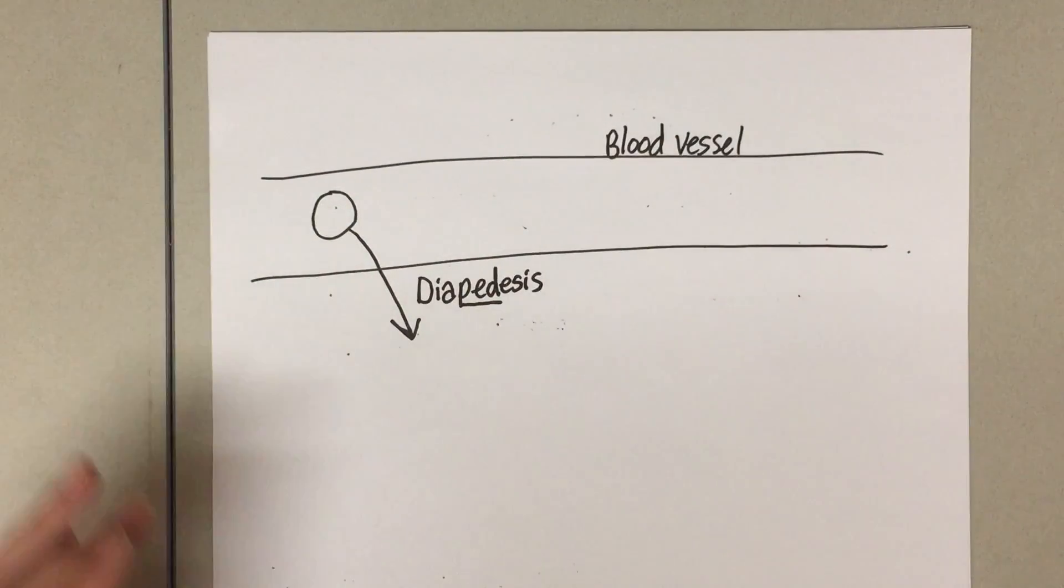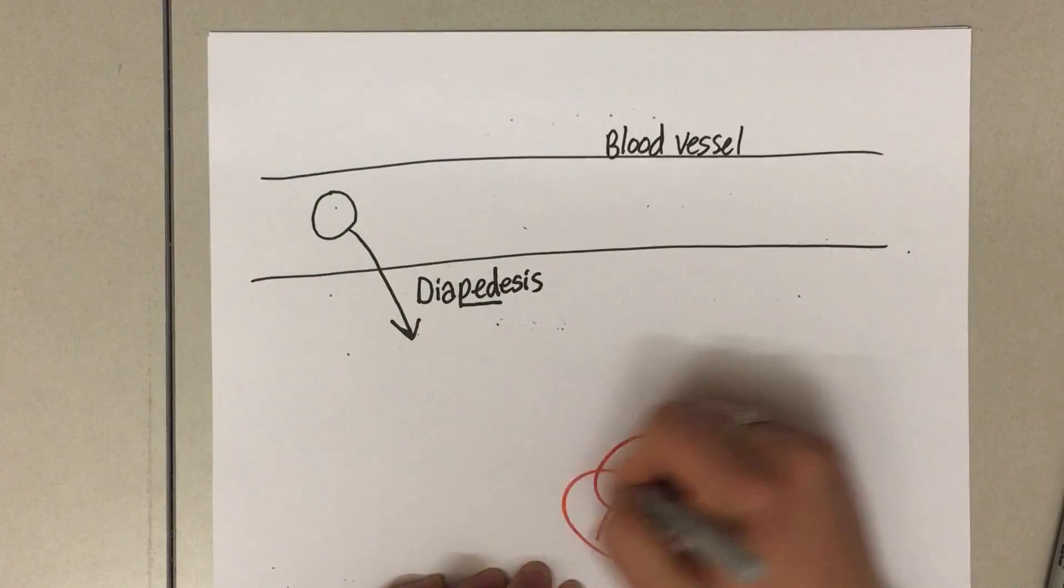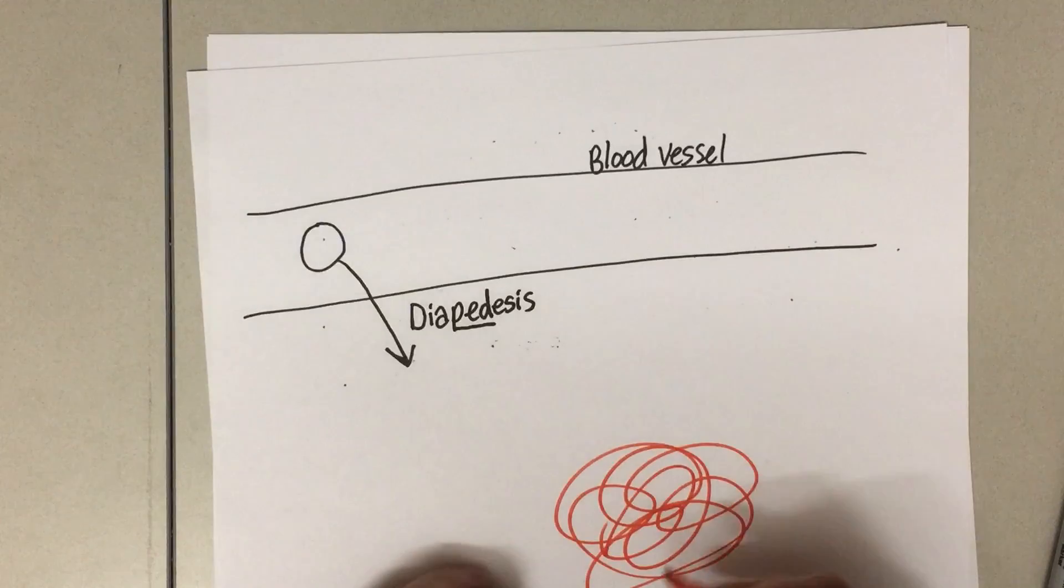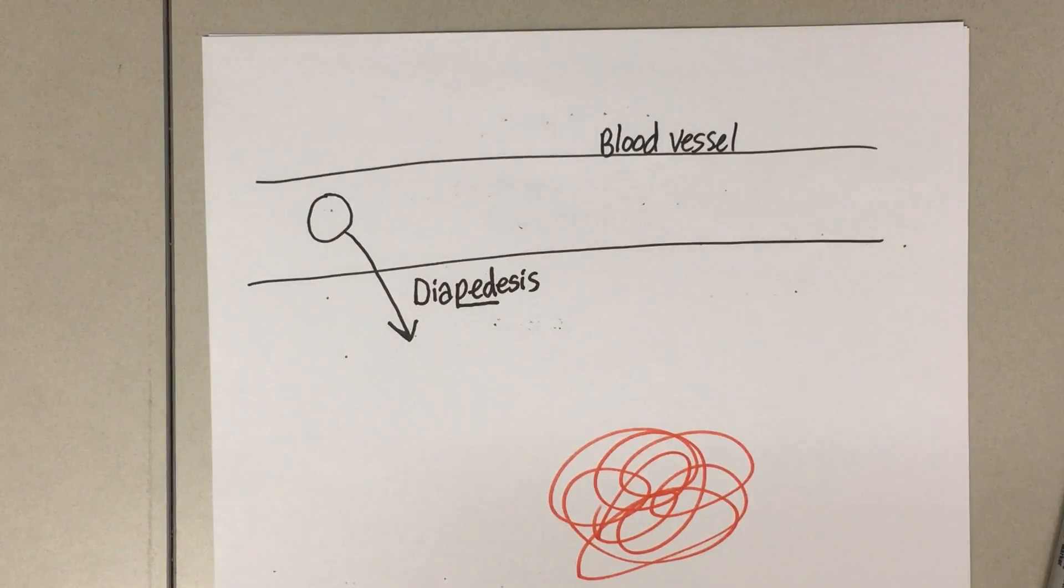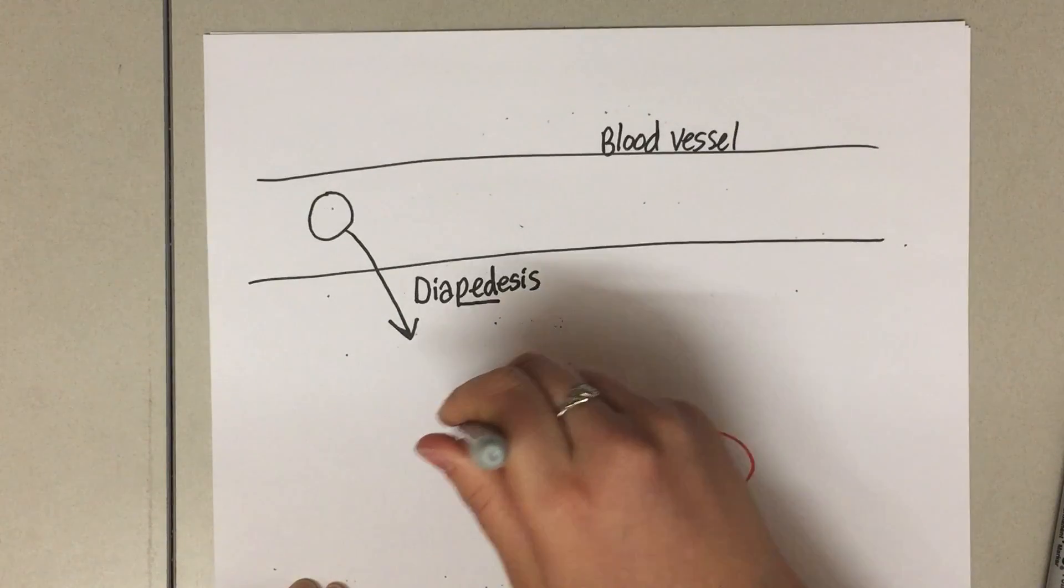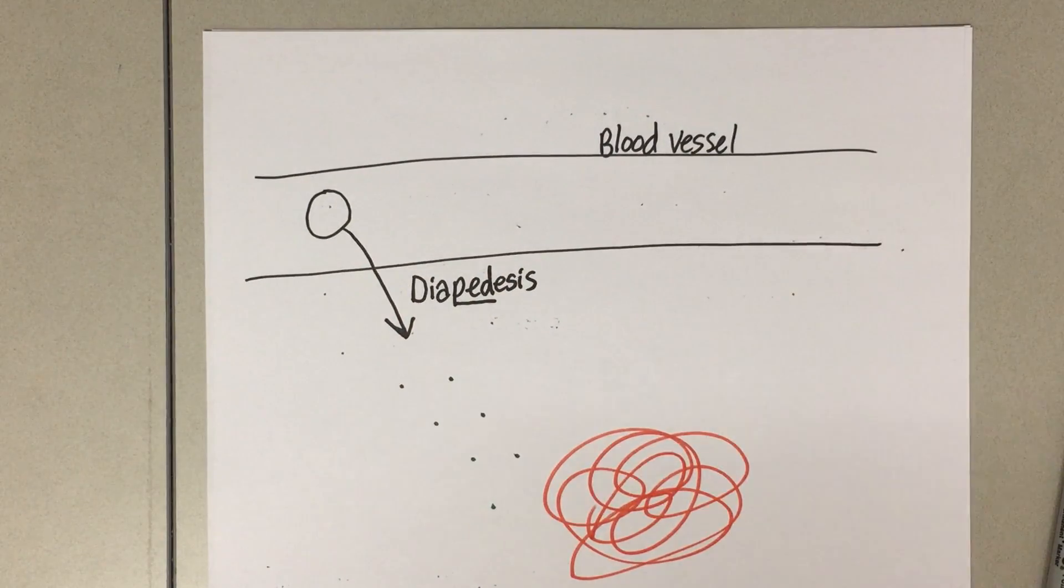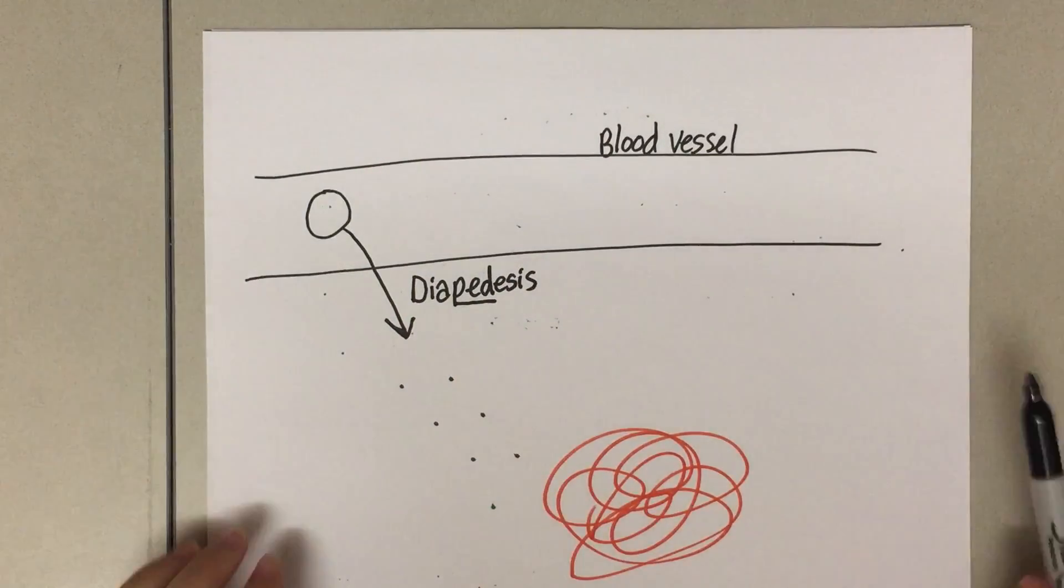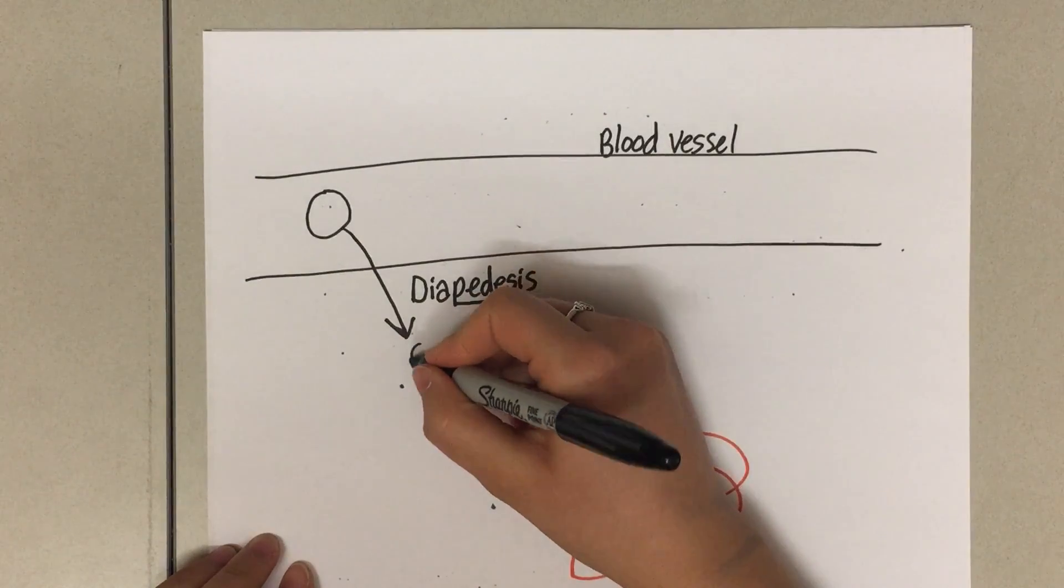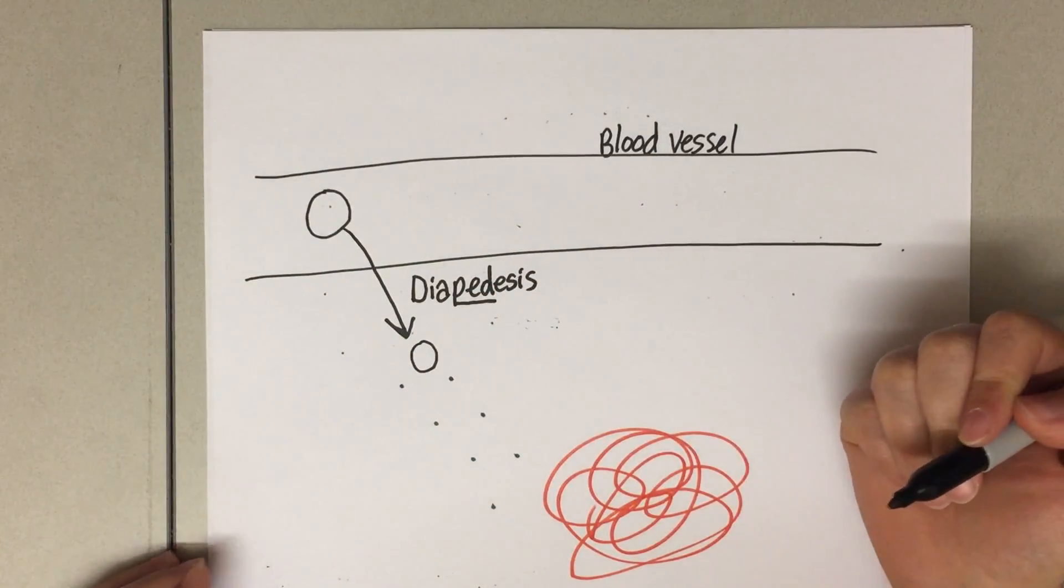If we had some tissue damage - maybe you were cut and some pathogens broke into the tissues - there's going to be inflammatory markers that will be spread out throughout the tissues from this inflammation. This monocyte will be able to follow these chemical messages to the site of inflammation.